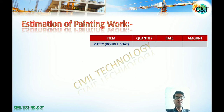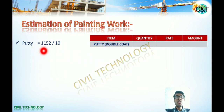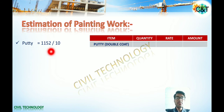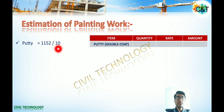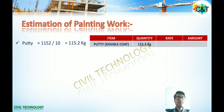Let's calculate the quantity of each material for our example. First, putty — we apply it in double coat. The coverage area covers 10 to 12 square feet per kg, so we take 10 square feet for conservative calculation. Total painting area divided by coverage area gives the quantity of putty. That is 1,152 divided by 10, which equals 115.2 kg. Just put this down in the table for calculations.